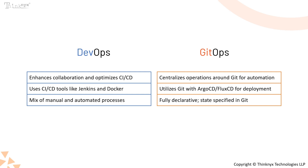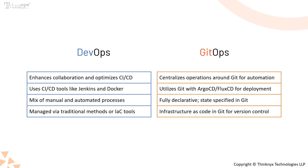Lastly, we have infrastructure management. In DevOps, infrastructure can be managed via traditional methods or Infrastructure as Code tools like Terraform. In GitOps, infrastructure is treated as code stored in Git, ensuring that changes are version controlled and auditable.